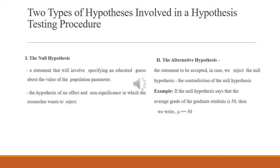The null hypothesis represents no effect and no significance — it is the hypothesis the researcher wants to reject. If we reject it, it will have no effect on the testing procedure or research. The alternative hypothesis is the hypothesis other than the null hypothesis — it is the statement to be accepted when we reject the null hypothesis.